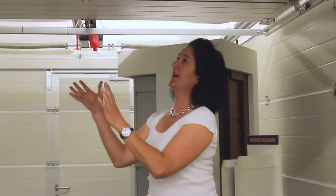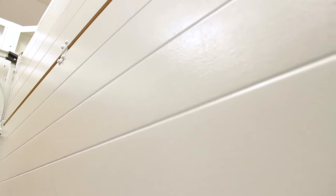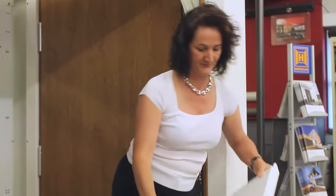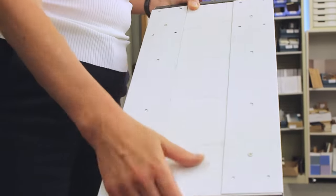Every sectional garage door has an off-white stucco effect on the inside, and I'm going to show you one section. This is the off-white effect of the inside.